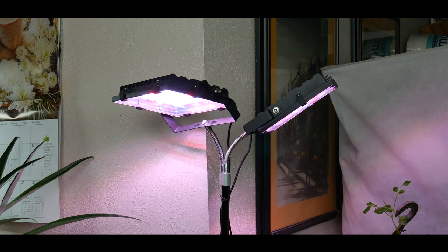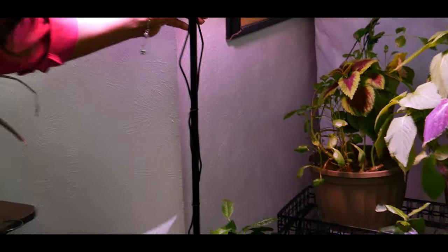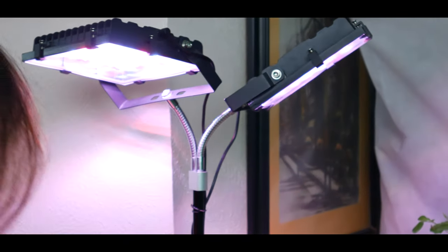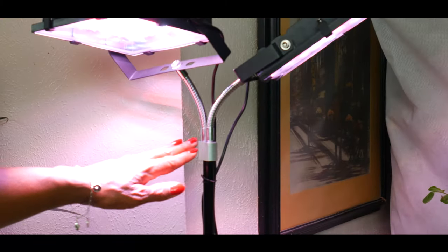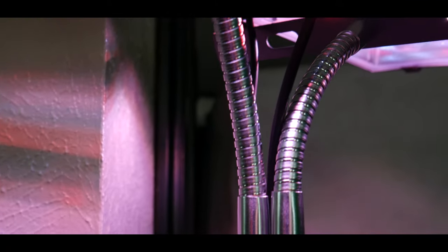The grow lamp has three rods to allow for different heights from a minimum of five inches to a maximum of four to five feet. Each lamp has two flexible hoses to allow for different angles.